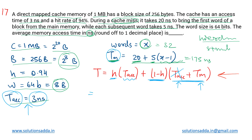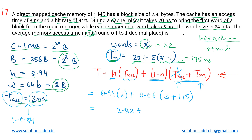Using the hierarchical formula: AMAT = 0.94 × 3 + (1 − 0.94) × (3 + 175). The miss ratio is 0.06. So this is 2.82 + 0.06 × 178 = 2.82 + 10.68 = 13.5 nanoseconds for the hierarchical access case.